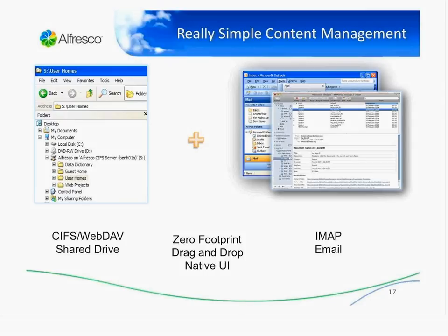One thing we believe we got really right from day one was making the whole repository as simple to use as a shared file drive. What we did technically was make the repository a SIFT repository. The key thing about that is it's a zero-footprint client — there's nothing to install on the client so that you can make the repository look like a shared file drive. You can literally go to the Alfresco drive alongside your C drive and D drive, drag and drop any documents in, and all of a sudden you get full content services like version control, security, and metadata management — but you're working from your native UI, whether that's Explorer or Save As in Word or PowerPoint. We've taken a very similar approach to email.